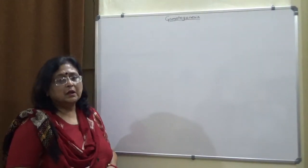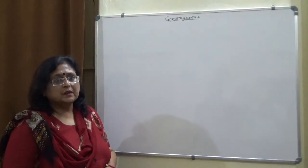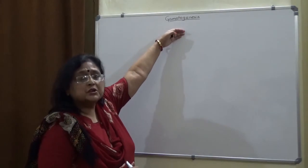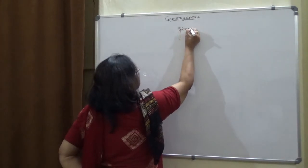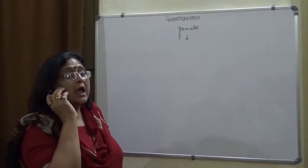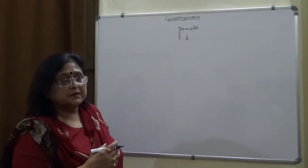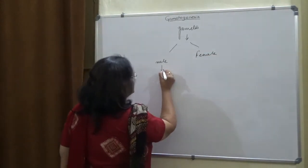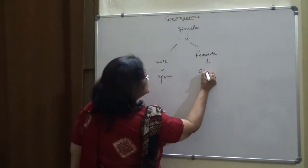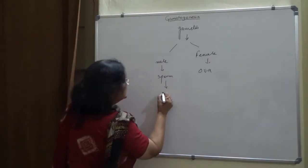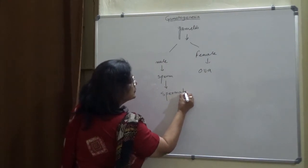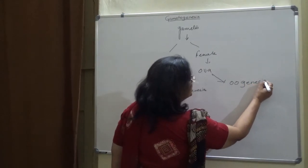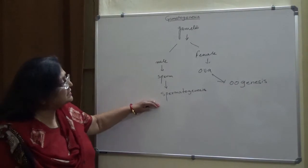Welcome to this lecture on embryology. Today is the first lecture on gametogenesis. As the word itself is explanatory, gametogenesis means production of gametes. Gametes are produced and differentiated during this process. There are two types of gametes: the male and the female. The male gamete is known as sperm and the female gamete is known as ova. The sperm is produced by a process known as spermatogenesis, whereas ova is produced by the process of oogenesis.